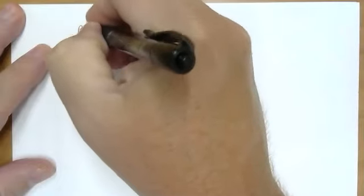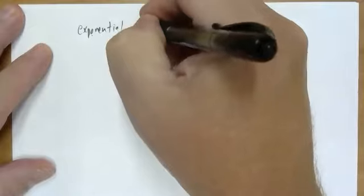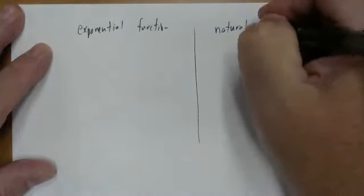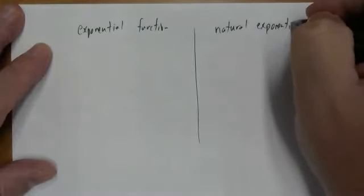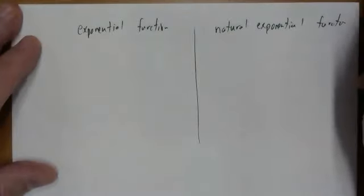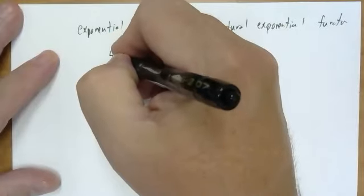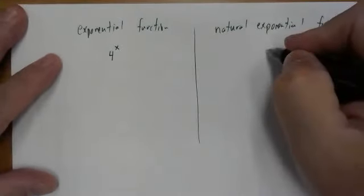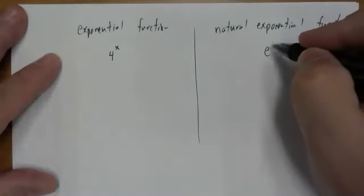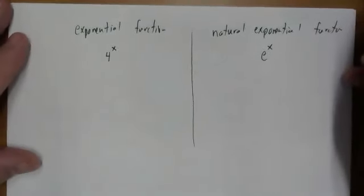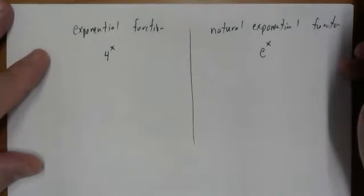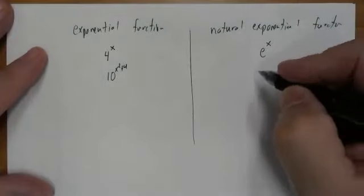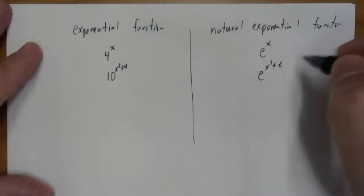We have exponential functions and natural exponential functions. Exponential functions are when the exponent is basically any number. The natural exponential function is when the base is this special constant e. So I could have 10^(x²+4) — that's an exponential function. e^(x²+x) is a natural exponential function.